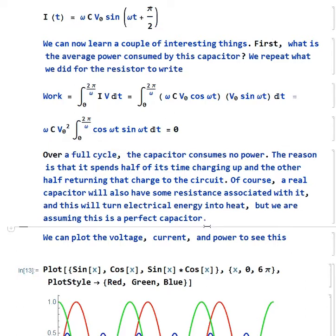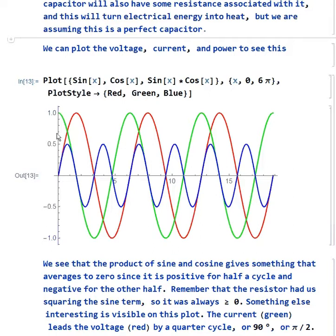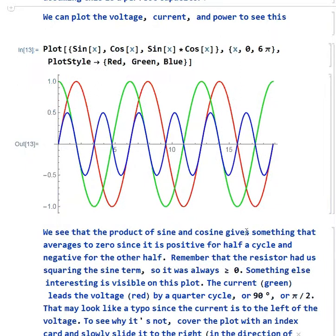What does it look like if we plot the voltage, current, and power? Well, the red here is the voltage. The green is the current. That's the cosine. And the blue is their product, the power. If you notice, the blue is above the line or positive as often as it's below the line. So this is why we get zero net power consumption here. The other thing we notice is the green current line leads the voltage by a quarter cycle, which you could also call 90 degrees or π/2 radians or whatever. It may look like I've got that backwards since the red is over here to the right. But remember the direction of time. If you imagine covering this whole thing with an index card and then sliding it to the right, what you'd see is first you get the maximum of the green line, the current, then you get the maximum of the voltage a quarter of a cycle later.